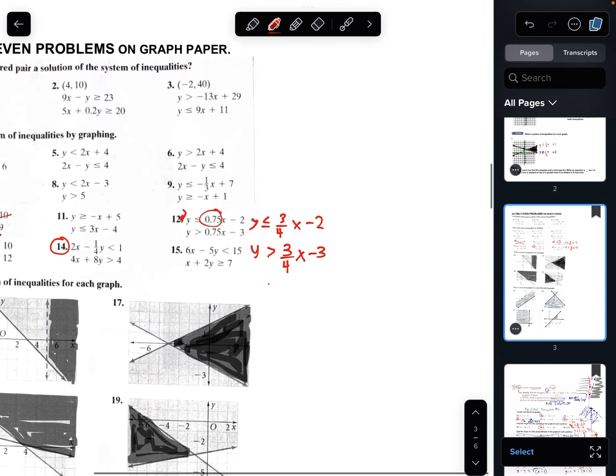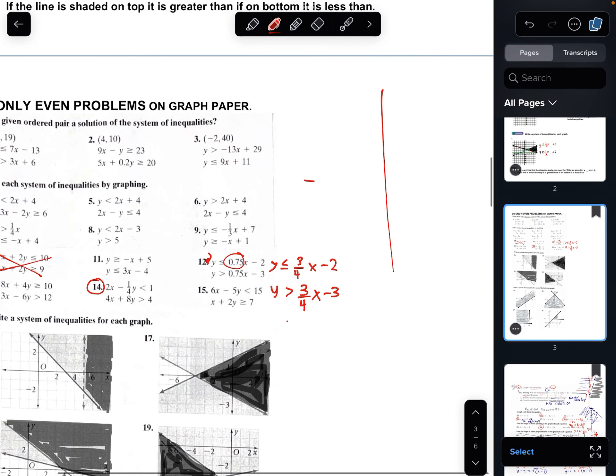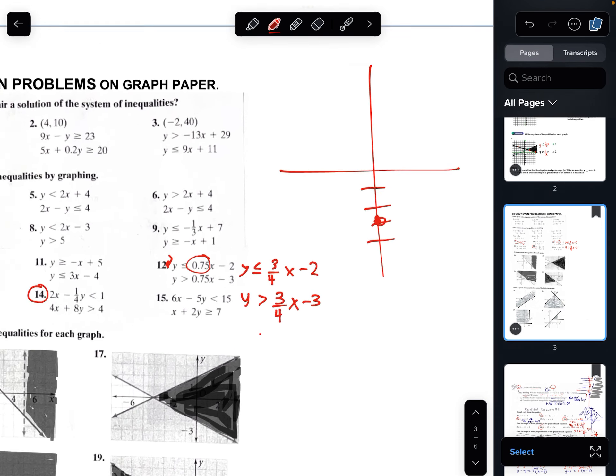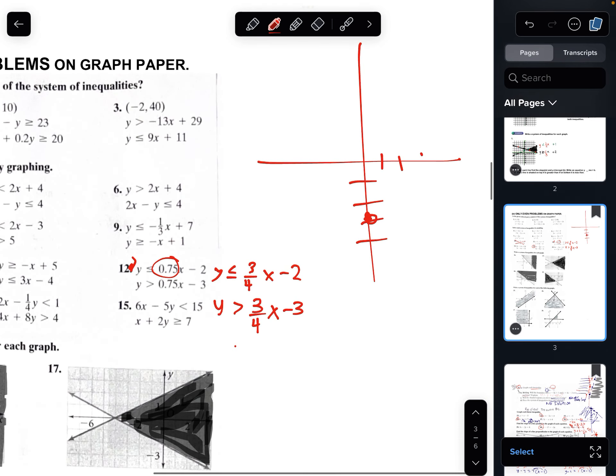So then graph that. That should be an easy graph. 1 is at negative 2. Up 3, over 4. 1, 2, 3, 4. And then down 1, 2, 3, over 4. 1, 2, 3, 4. Right there. And then you connect the dots.